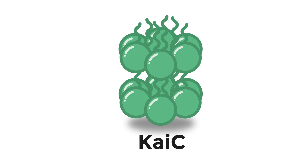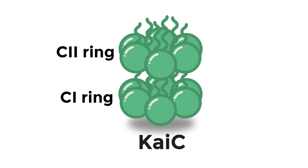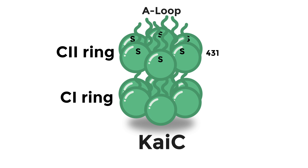At the heart of the oscillator, KaiC is a hexameric protein whose N and C terminal domains interact between monomers to form two rings, C1 and C2. The C terminal peptide on C2 of each monomer, called the A-loop, alternatively dangles or is tucked into the ring. When dangling, it can be bound by KaiA. In addition, the C2 ring carries the amino acid residues serine at position 431 and threonine at position 432. These residues are sites of autophosphorylation by KaiC.